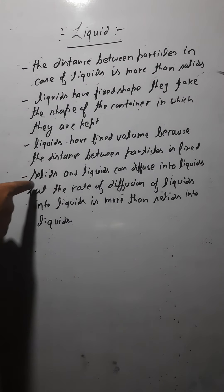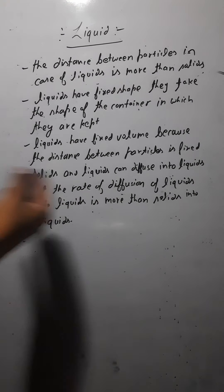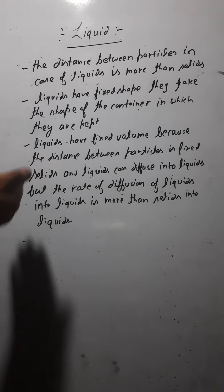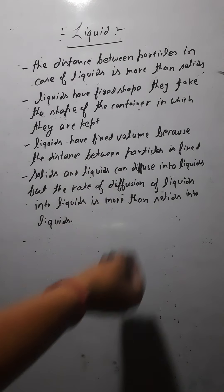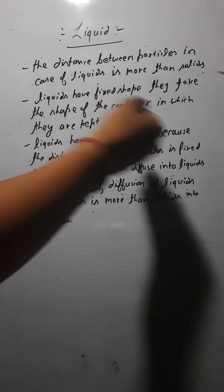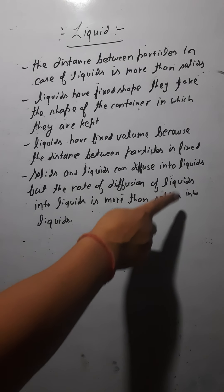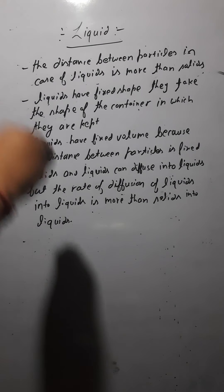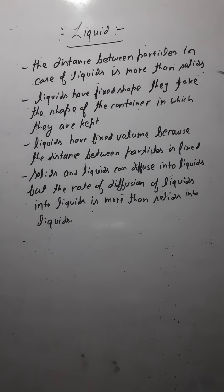In case of gases it is different — we will talk about that in the next lecture. Next point: solids and liquids can diffuse into liquids. If you put a solid in liquid, it would be diffused there — like salt and water, and sugar and water. Liquids can also be diffused into liquids, like a few drops of ink put in a bucket of water makes the whole water blue. But the rate of diffusion of liquids into liquids is more than that of solids into liquids — the rate of diffusion of liquid into liquid would be faster than solid into liquid.